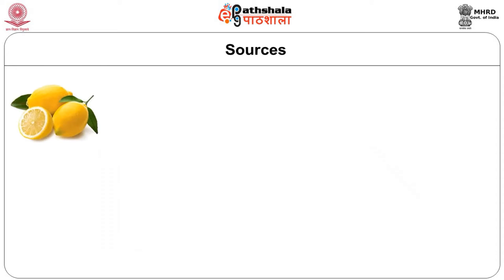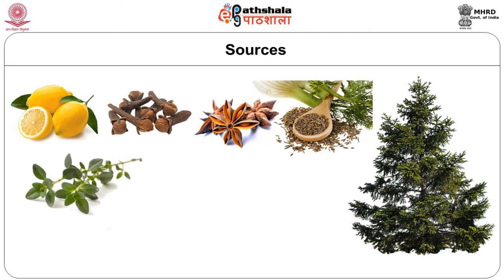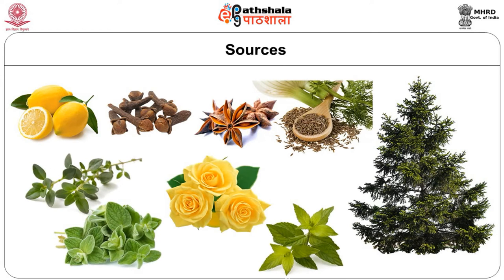Common terpenes and terpenoids include limonene and citral, both in lemons; camphor and pinene from pine trees; eugenol from cloves; anethole from fennel and anise; thymol from thyme and oregano; geranial from roses; and menthol. These are the examples and sources of the terpenes and terpenoids group.